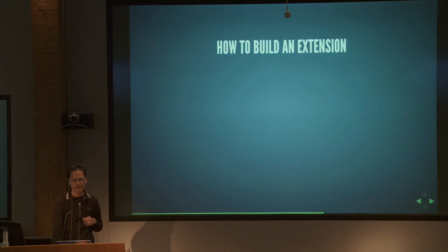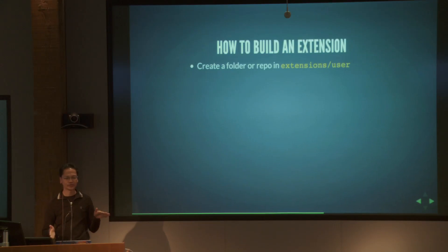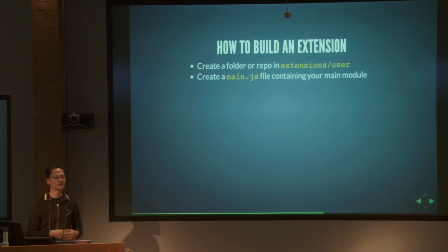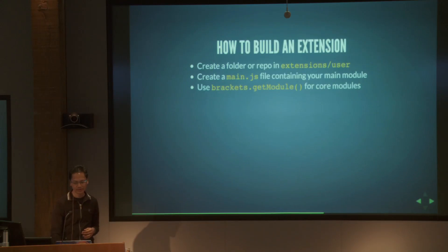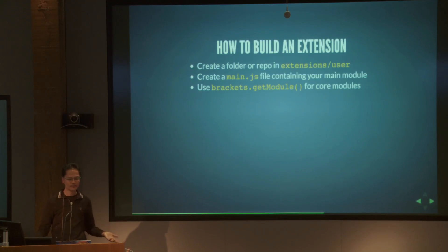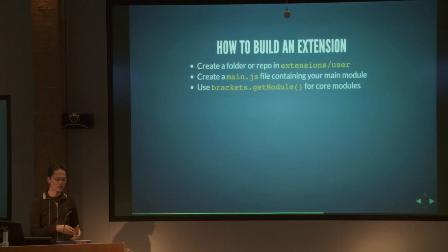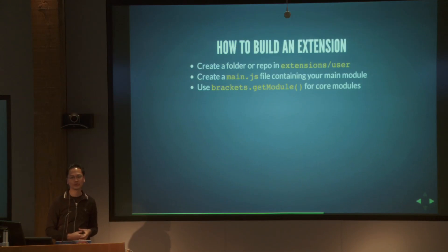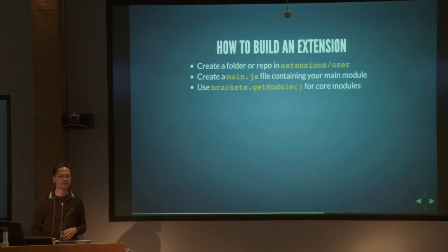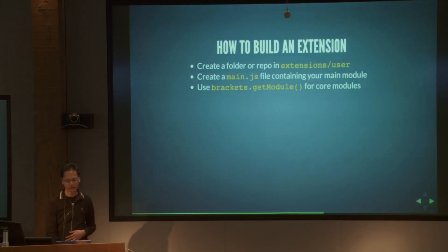In terms of how to build an extension, it's actually pretty simple right now. Inside the Brackets source folder, there's an extensions folder, and in there is a user folder. To create a new extension, you just create a folder with whatever name you want and put a main.js file in there containing your main module. When writing an extension module, it's exactly the same as a normal module — the only difference is with how require works. You get a private copy of whatever modules you're requiring so you don't conflict with other extensions. To access core Brackets modules like DocumentManager or EditorManager, you use brackets.getModule instead of require.